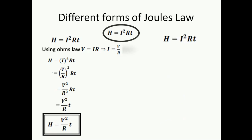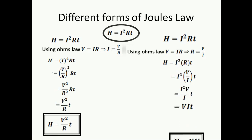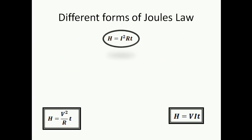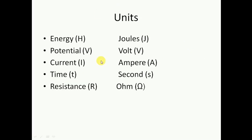Now taking the formula again, this time I'm changing R instead. I'll write R is equal to V by I and substitute V by I in place of R. If you cancel one I from the I squared, you will get V times I times T. So H is equal to VIT. These are the three different forms of Joule's law of heating.